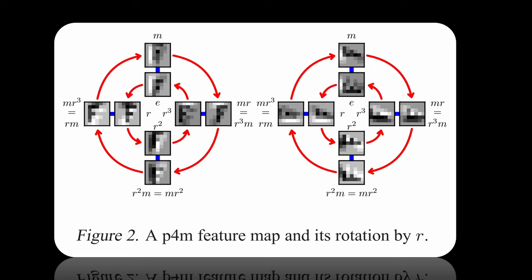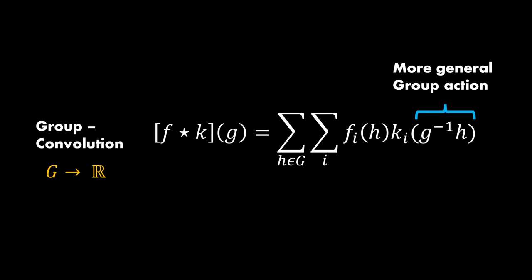This is the definition for group convolutions after the first layer. Here, you can see that we operate on group representations H now, instead of pixels as before. What this means is simply that some already transformed output is transformed again by another group action G. The transformation of such a group representation is done by individually transforming each of the kernels and transforming the whole structured feature map. This is best visualized in the following blog post I've linked in the video description.